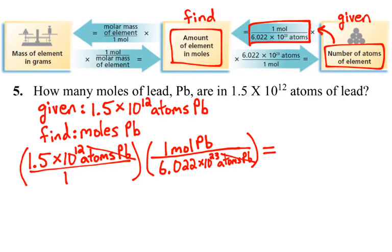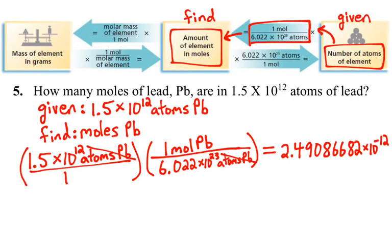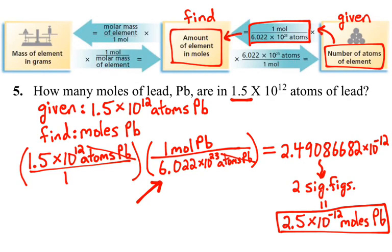Atoms of lead cancel out and we are left with simply moles of lead. We take 1.5 times 10 to the 12 atoms of lead times 1 mole of lead over 6.022 times 10 to the 23rd atoms of lead, giving us 2.49086682 times 10 to the negative 12 — but that has too many significant figures. We have 1.5 times 10 to the 12, which is two significant figures, so we round to two significant figures: 2.5 times 10 to the negative 12 moles of lead.